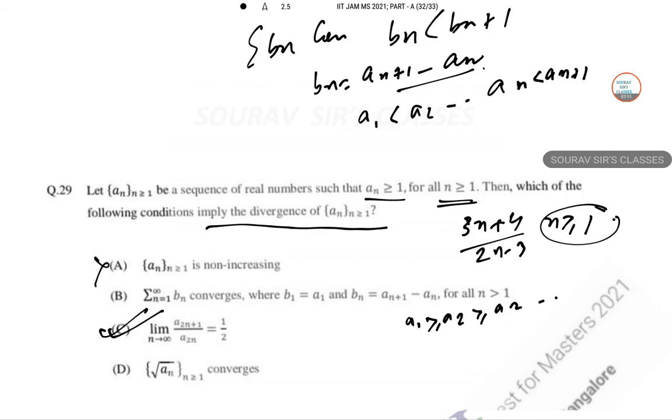And for b_1, remember that if root over a_n converges, then a_n is also convergent. So in that case this is also wrong.